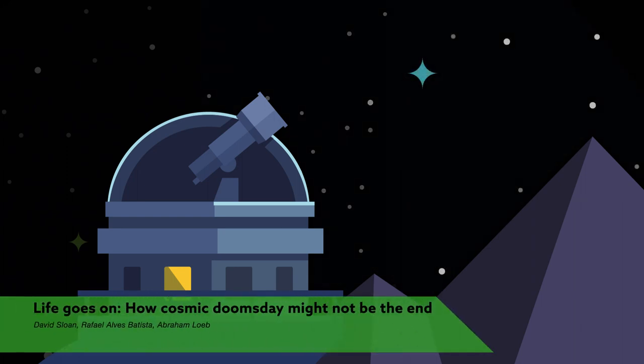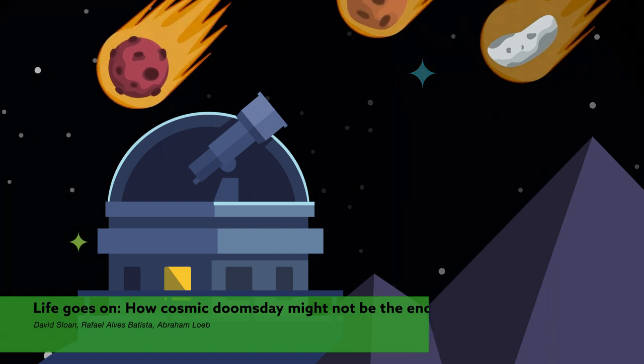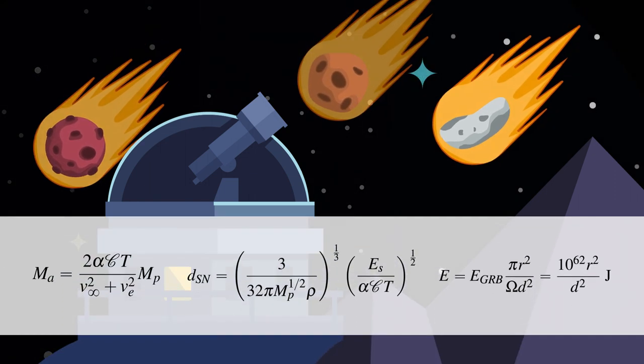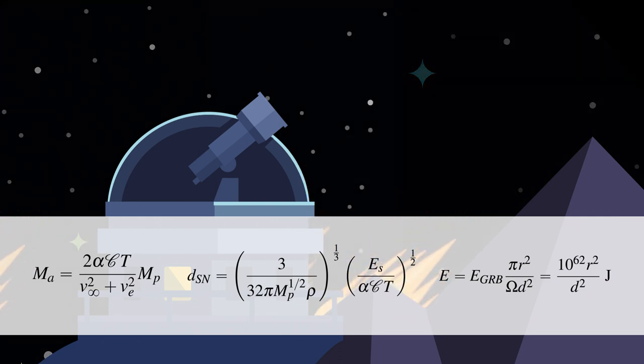A team of researchers from the U.S. and the U.K. has launched a mathematical assault on our planet. Using energy calculations, they've tasked themselves with determining the ability for life as we know it to make it through a catastrophe of cosmic proportions.